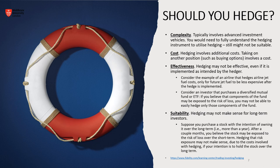The third point is effectiveness — hedging may not be effective even if implemented as intended. Consider British Airways: they want to protect their position against rising fuel costs, so they hedge against fuel becoming more expensive. But what happens when fuel actually becomes less expensive? The hedging was a waste of money. There are no guarantees; you're speculating on what could or could not happen. This is a prime example of how hedging may actually not be the right thing to do.